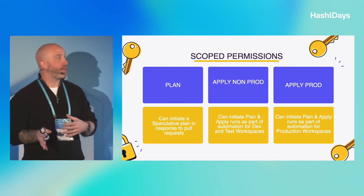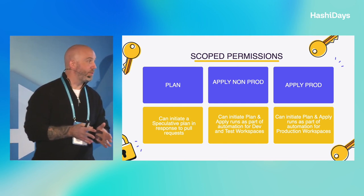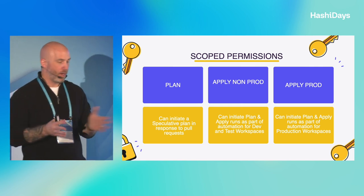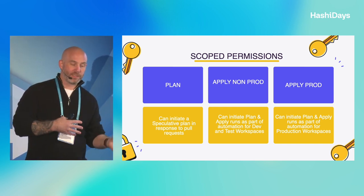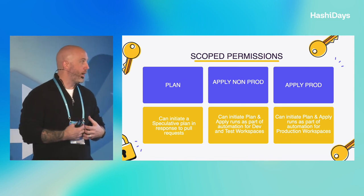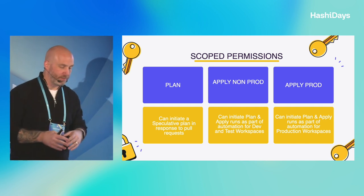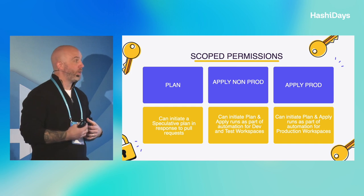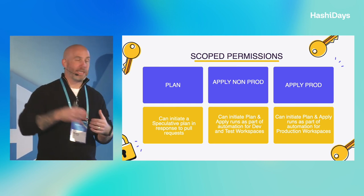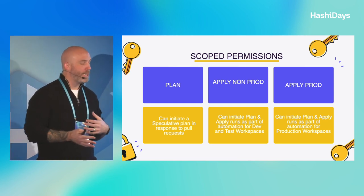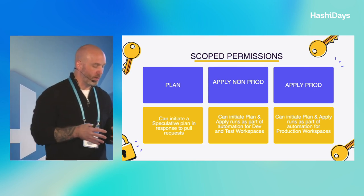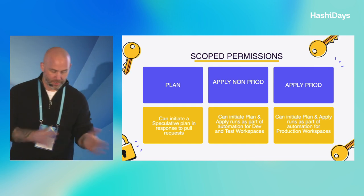With those three service accounts, we made sure they had very specific scopes. We have a plan service account that is only ever allowed to create speculative runs on pull requests — it can't apply, it just does plans, and can read state outputs from workspaces. We also have an apply for non-prod, which allows plan and apply only for dev or dev-test workspaces — nothing prod. And then we have an apply prod, which is the same but only for production workspaces. So apply non-prod cannot read anything in a prod workspace. By scoping these service accounts for a specific purpose and environment, we ensure the appropriate guardrails are in place.